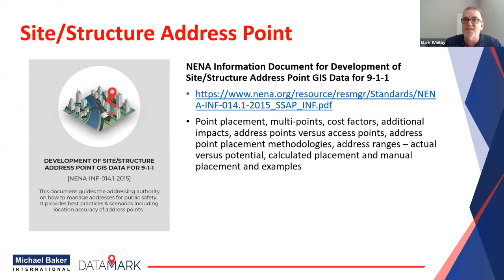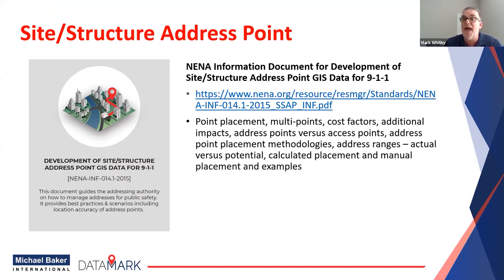The Site Structure Address Point document is an informational document from NENA — 62 pages of good information. It talks about point placement, multiple points, multi-structures like sub-addressing, address points versus access points, and address ranges — actual ranges versus potential. For example, your street may have 100 to 200 as a potential range, but your first house number starts at 104 and only goes up to 184. It also talks about calculated placement, manual placement — all kinds of useful things for you to decide what works in your community.